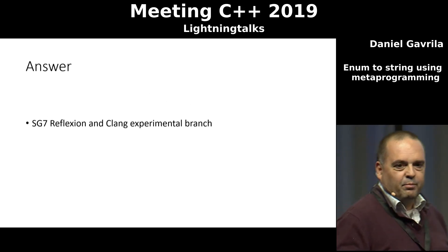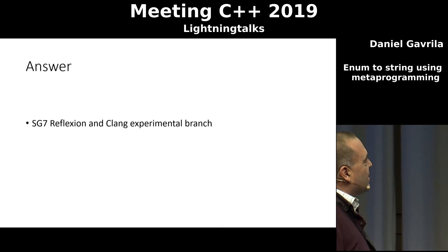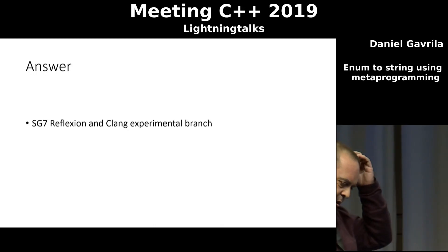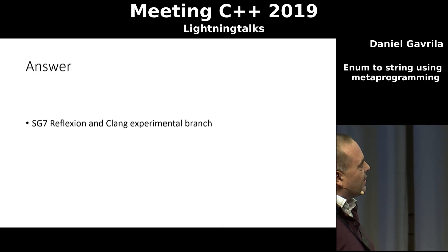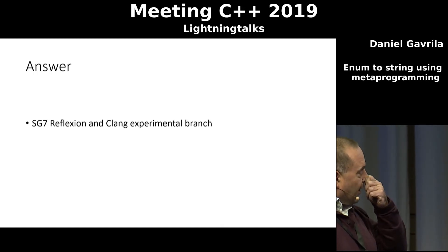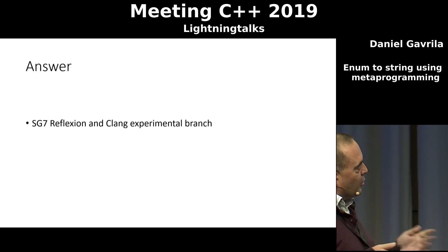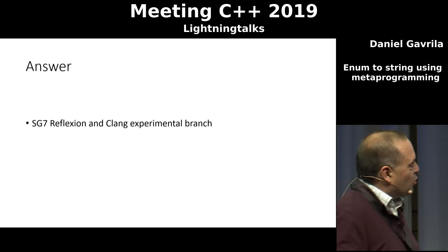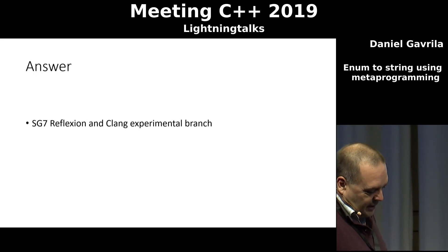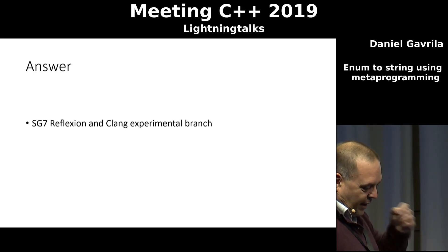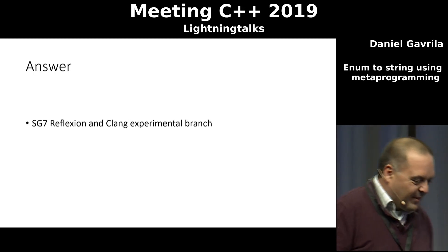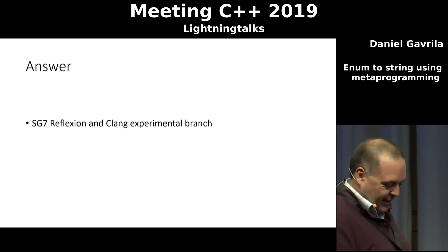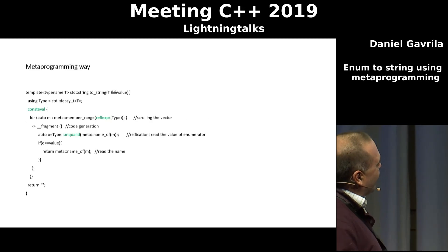I think some of you know this — it is the reflection proposal, even the reflection study group. The good news is that Clang has an experimental branch that you can try today to make some small programs. So I played with this — this was my first program that I will show you — and I was quite happy that it was working, and what I get looks like something like this.